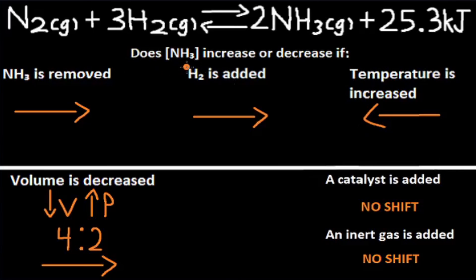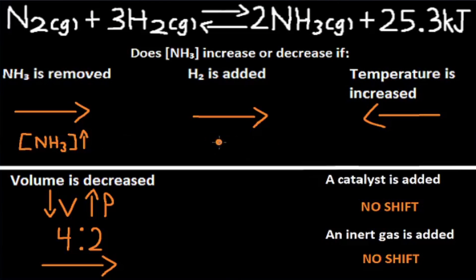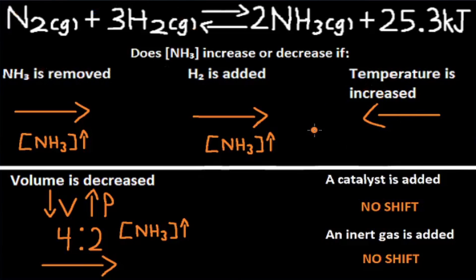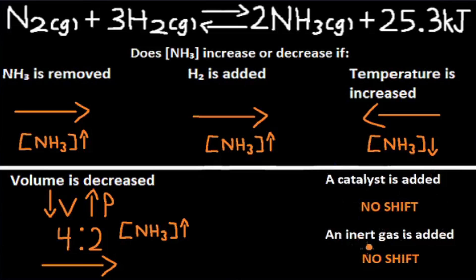If asked whether NH3 concentration increases or decreases, you need to look at what the shift is pointing at. A shift right points at the products, so the products increase in concentration, and the reactants decrease. NH3 is a product, so all shifts right increase the concentration of NH3. A shift left points at the reactants, so the reactants increase in concentration and the products decrease — meaning all shifts left decrease NH3's concentration. Catalysts and inert gas cause no shift, so NH3 will stay the same.